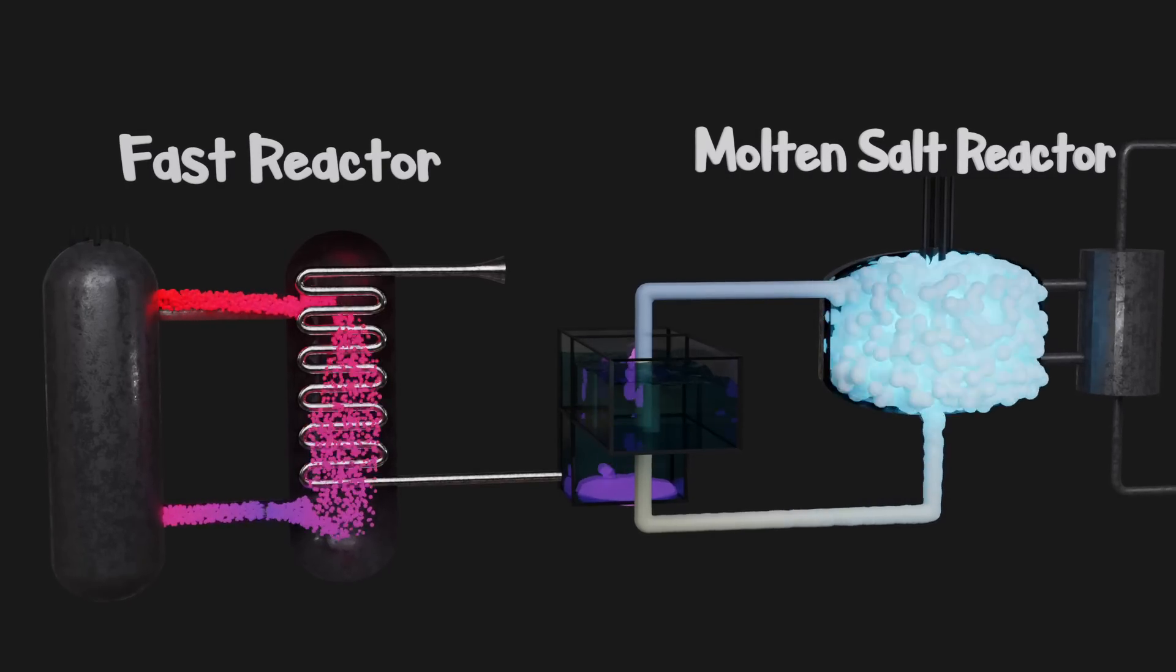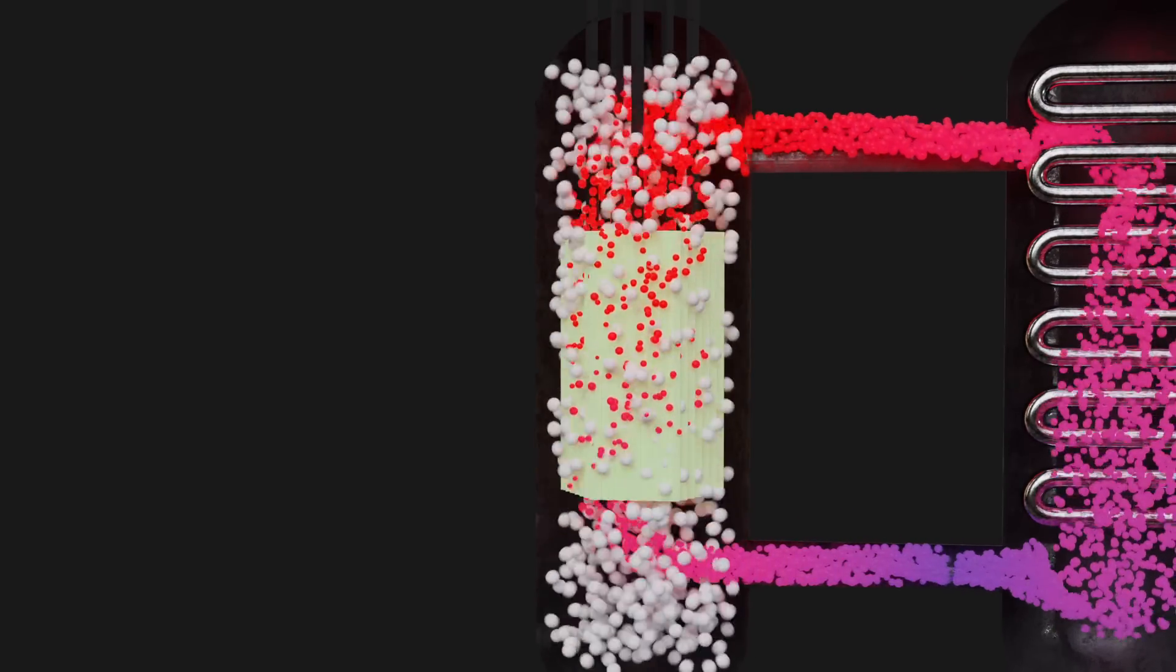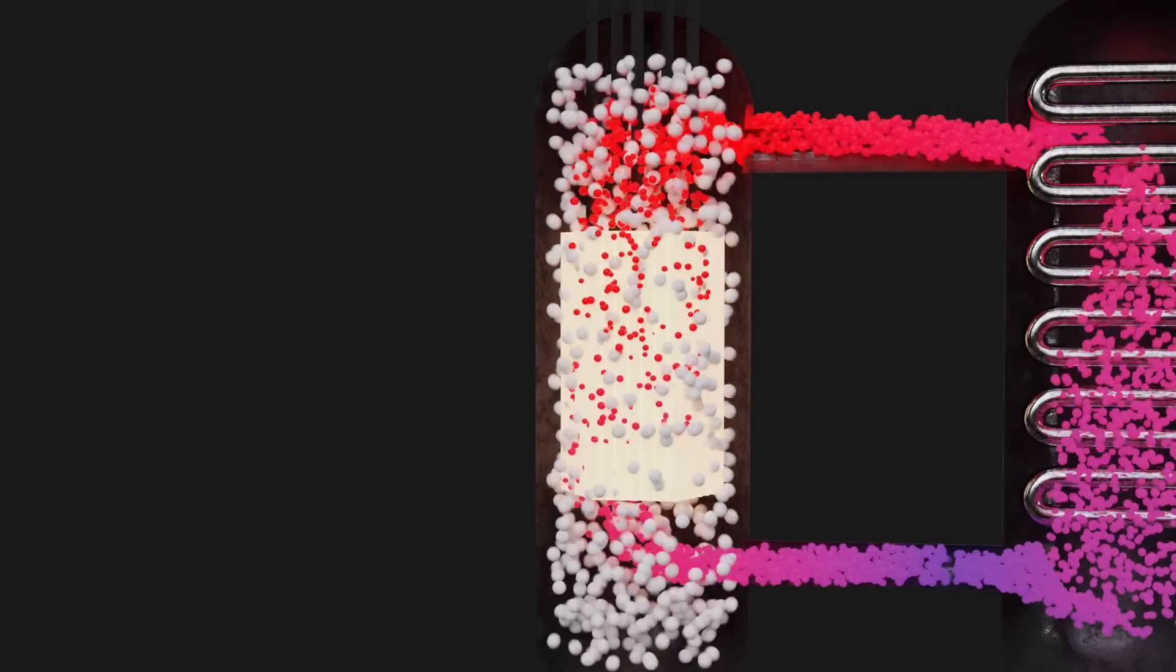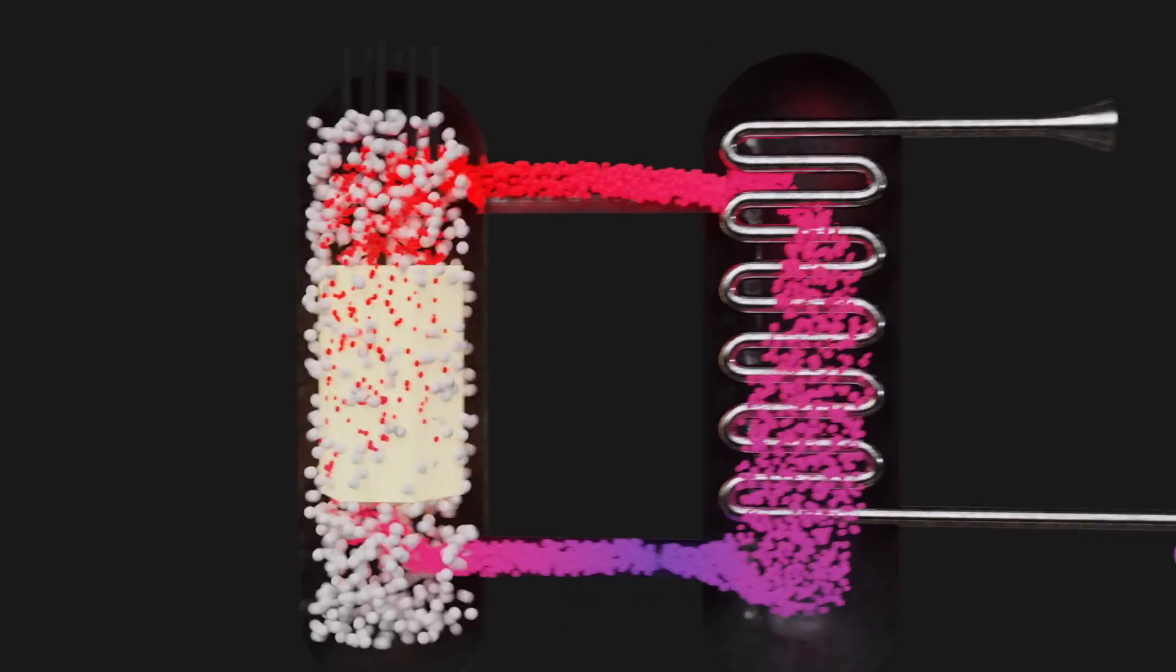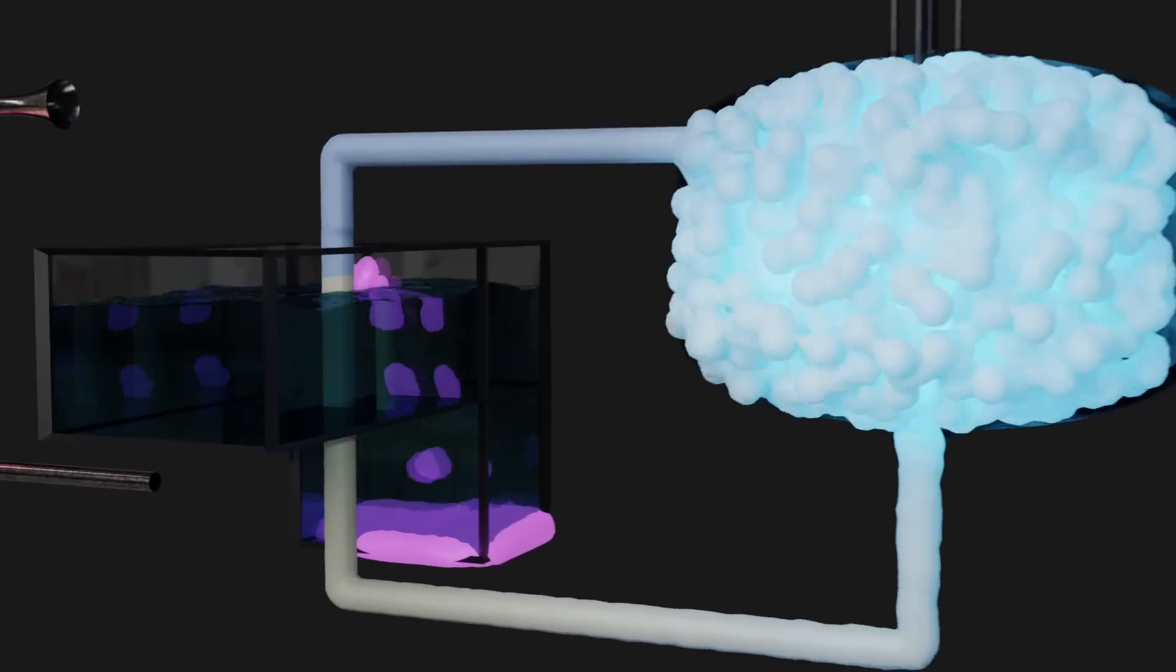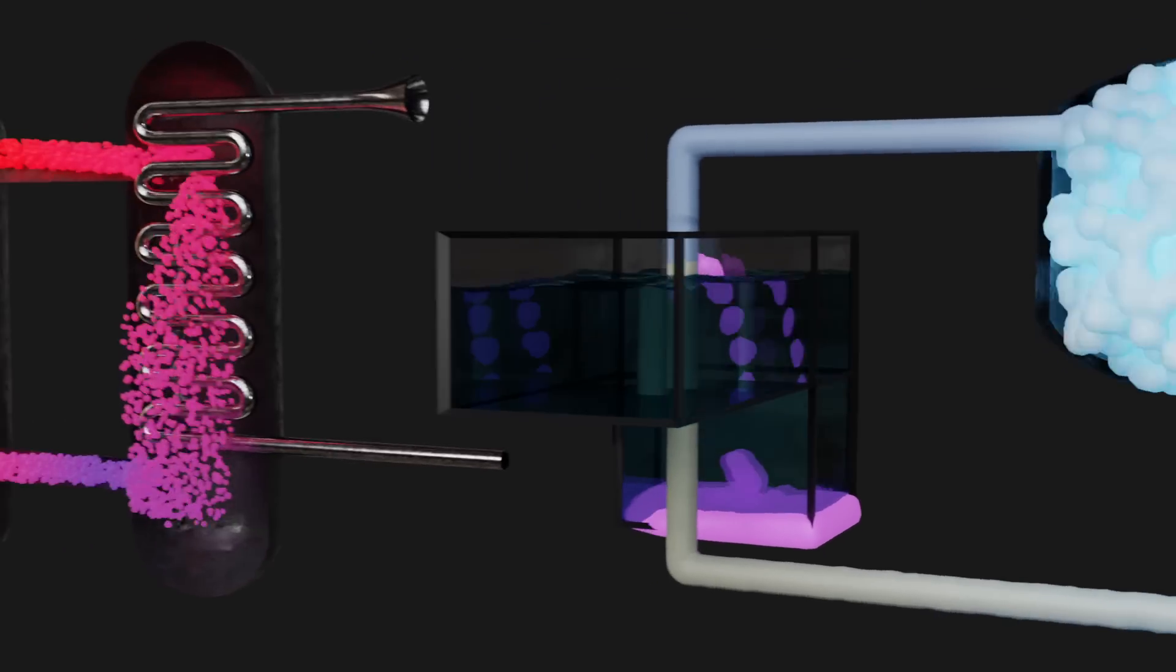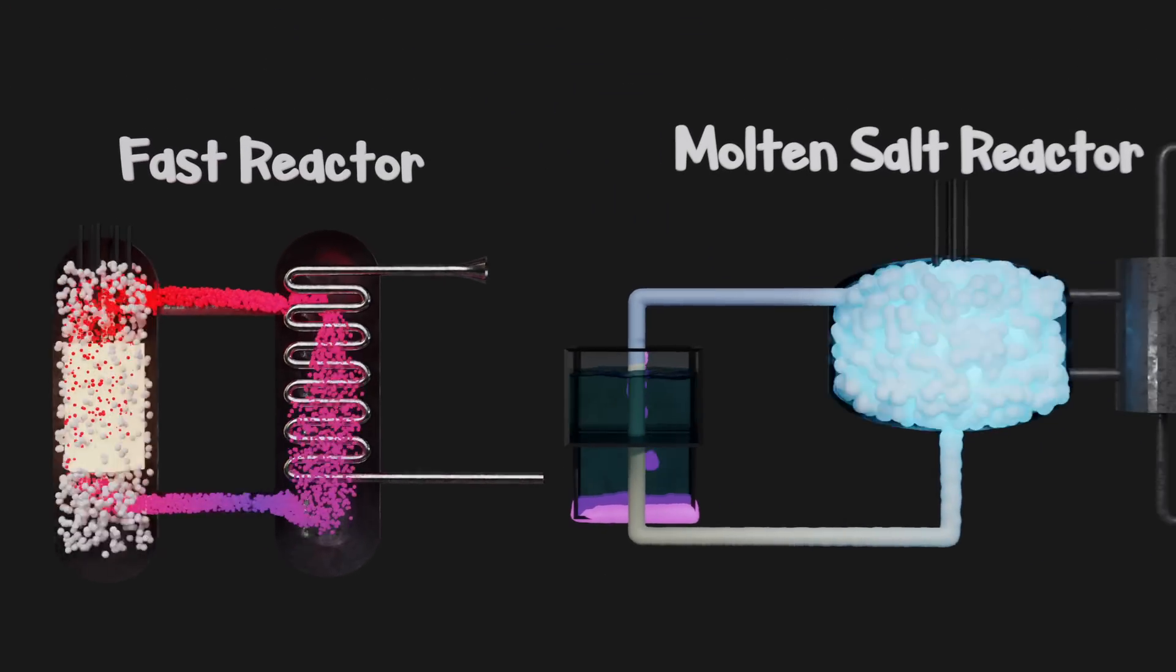The extreme environments within the cores of fast reactors require specialized material engineering that has yet to be perfected to an industry standard. Efficient thorium-fueled reactors require a unique fuel system to maintain self-sufficiency. Today, we're going to learn about the thorium fuel cycle and the obstacles it and fast reactors face moving forward.